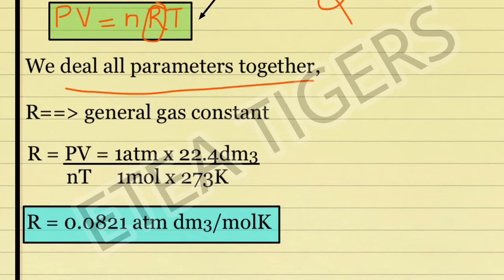We deal all parameters together. R is constant. What does the value define? We have PV and nT.